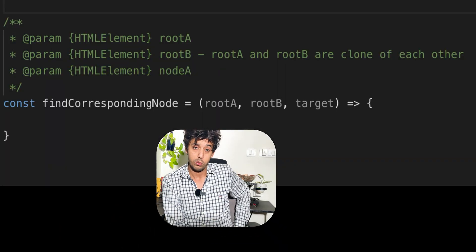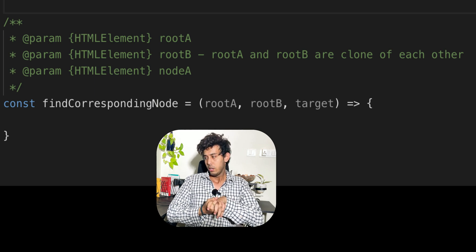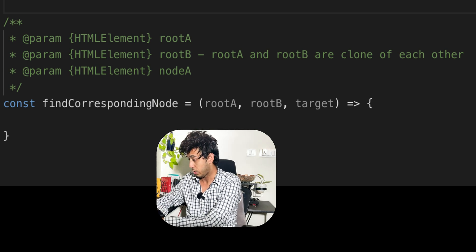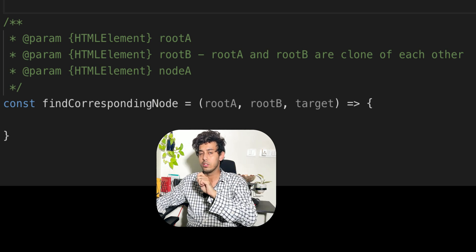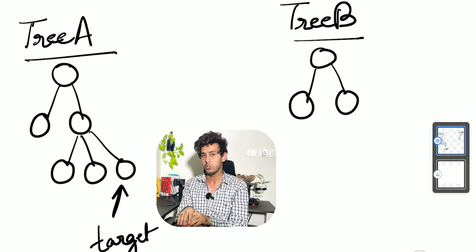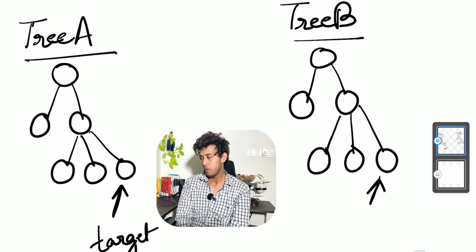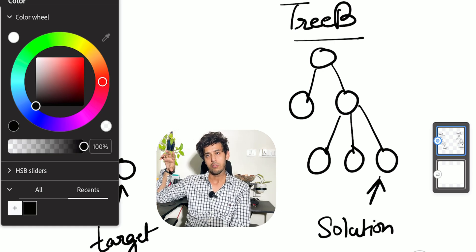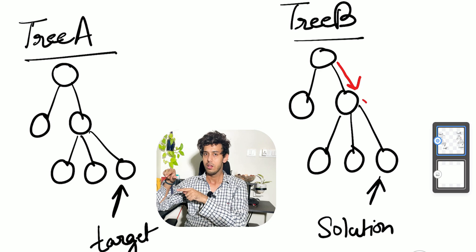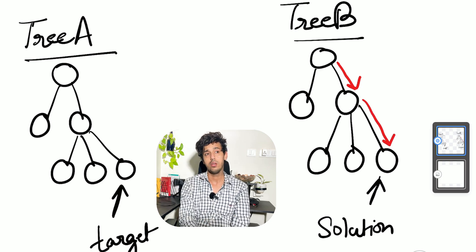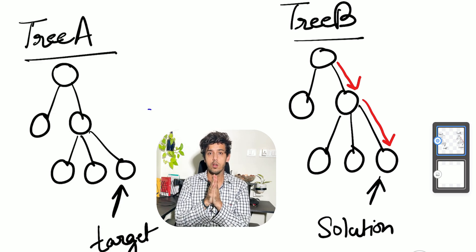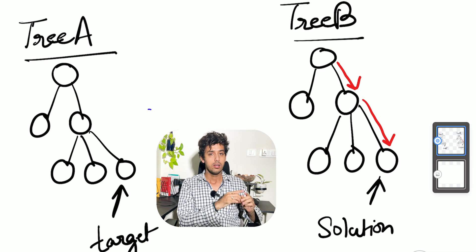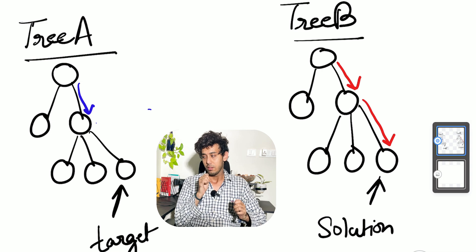There are multiple ways we can solve this problem, but let's think very intuitively. We are given root A, root B, and the target — the target is a node in tree A. One of the most intuitive approaches would be to traverse tree B and find the corresponding target node. We can build the path to traverse to that particular target node in tree B by knowing the corresponding path in tree A. We can use the information of the parent element very intelligently.